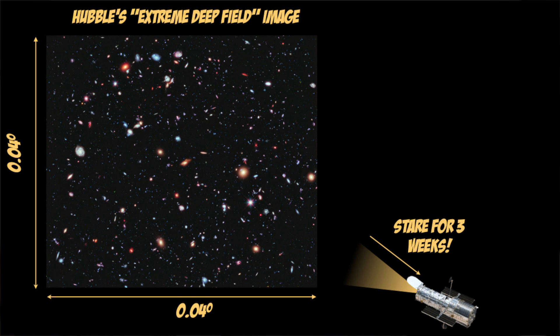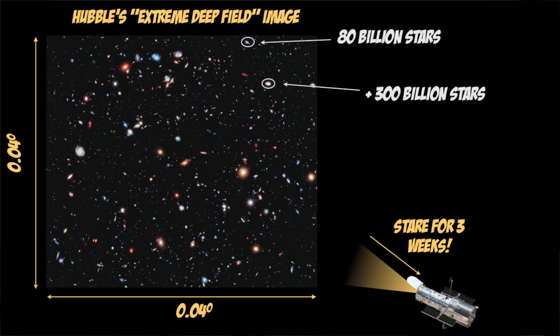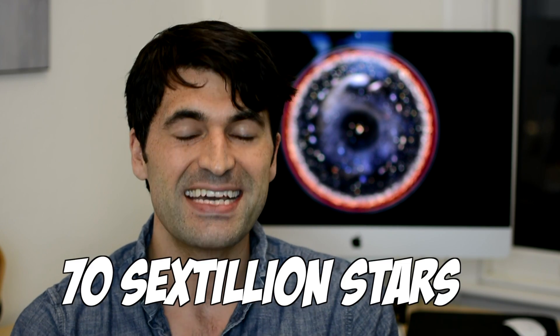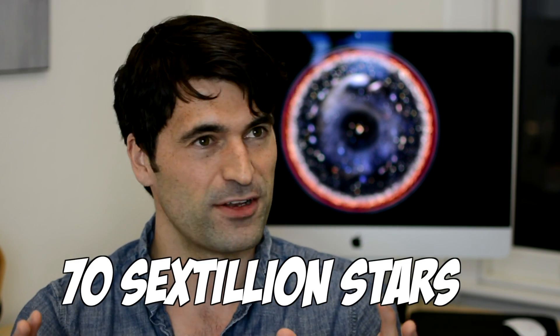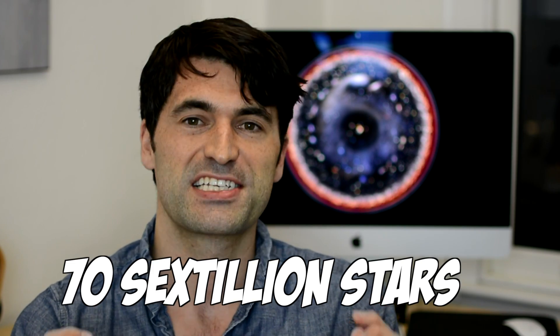A better way to calculate the total number of stars in the observable universe is to go back to that original patch-of-sky image, but instead of just counting the total number of galaxies, take each galaxy and estimate the number of stars within each based on the luminosity — the brightness of the galaxy itself. When you do this, you get an estimate of 70 sextillion stars in our observable universe, but that is definitely a lowball estimate because this calculation no longer accounts for missed galaxies that you can't see.